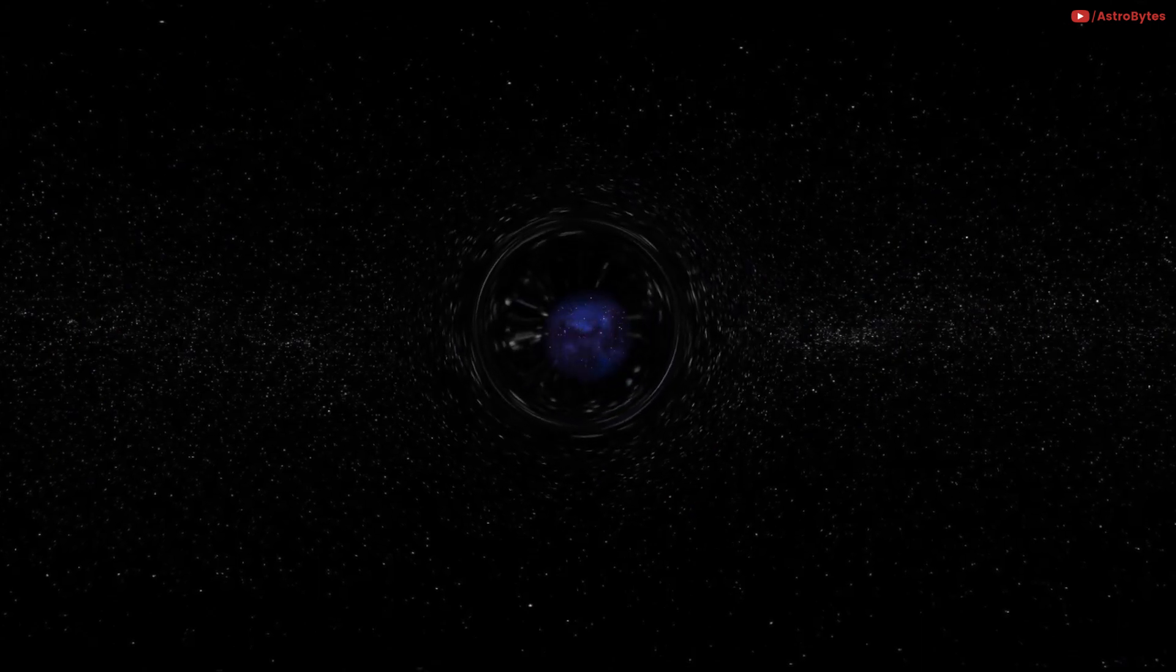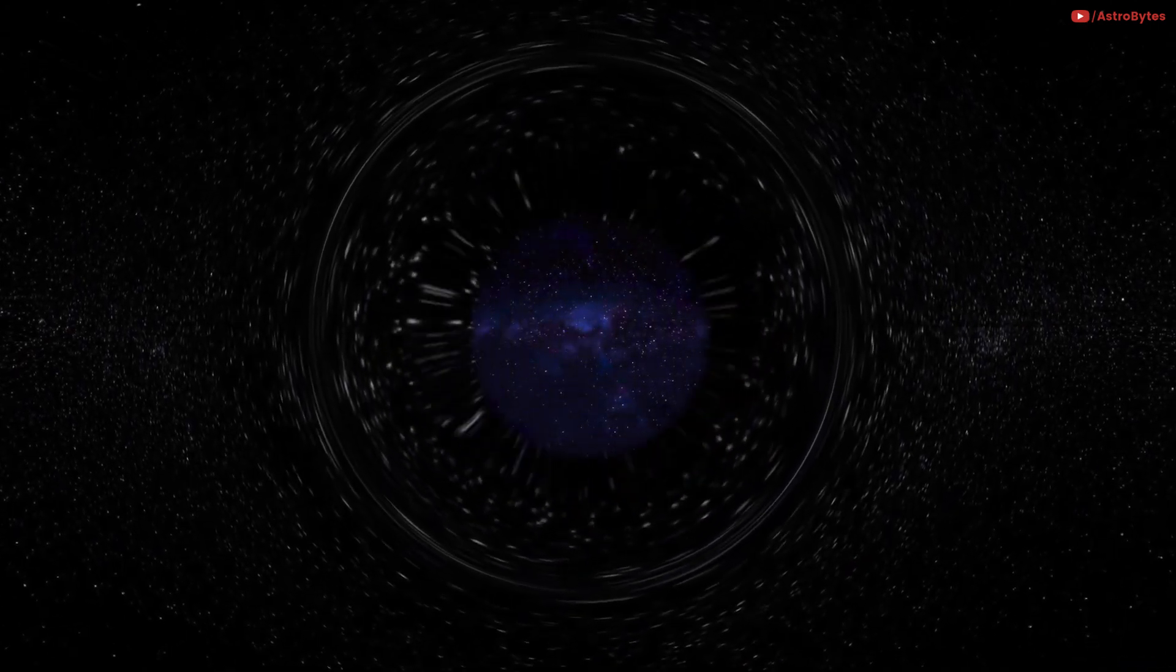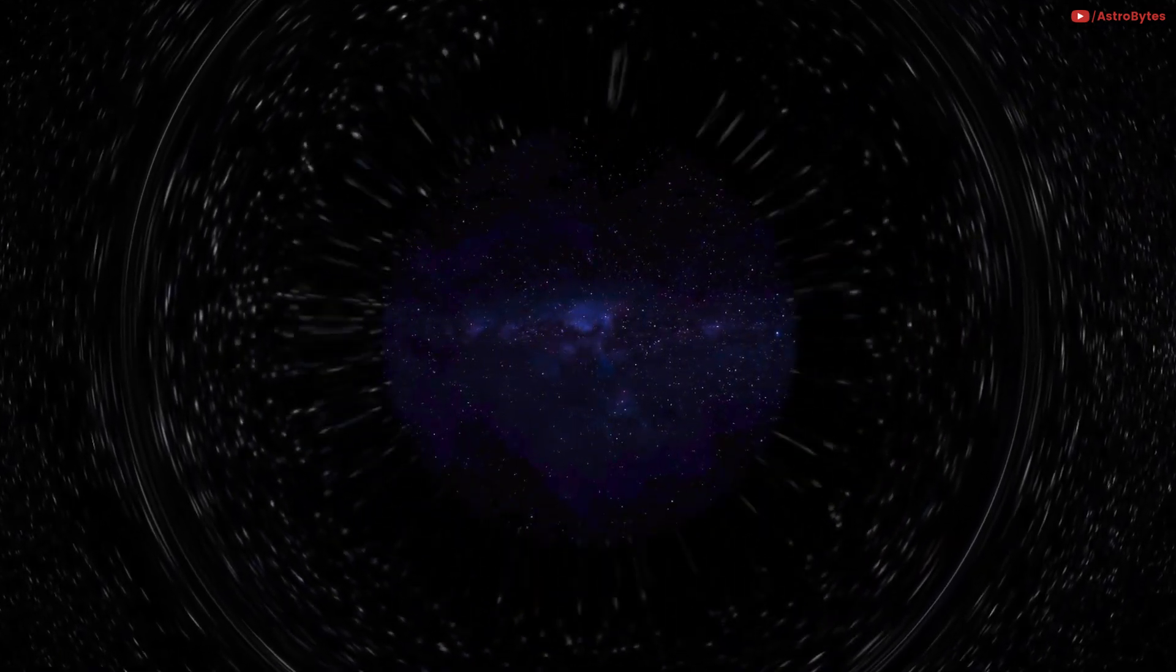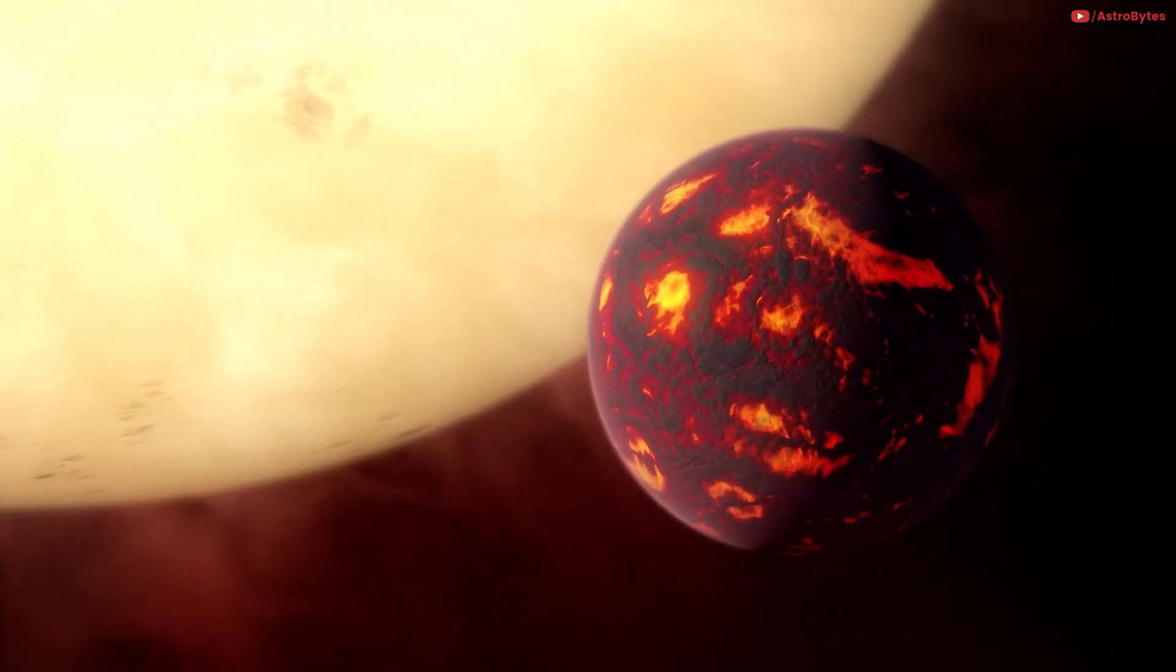Even if a recoiled black hole misses Earth, it might pass closely enough to cause earthquakes and other devastation, kick us out of the solar system, or spiral us into the sun.